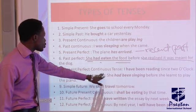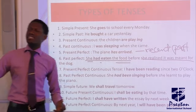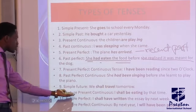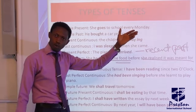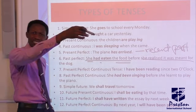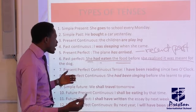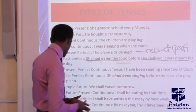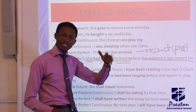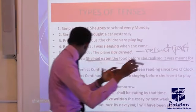The past perfect continuous refers to an action that started in the past, lingered and progressed, and ended — for example, 'She had been singing before she learned to play the piano.' Simple future talks about something that will take place in the nearest future — 'We shall travel tomorrow.' Future continuous refers to something that will be ongoing in the future — 'I shall be eating by that time.' Future perfect refers to something that will be completed in the future — 'I shall have written the essay by next week.' Future perfect continuous refers to something that will start in the future and progress to a particular point — 'By next year, I will have been playing.'